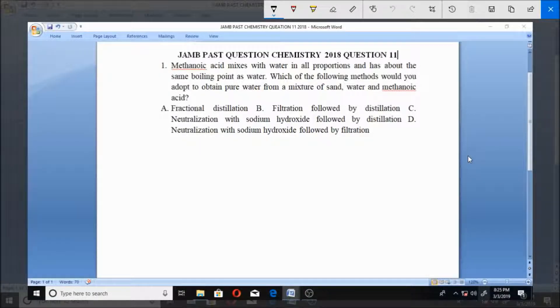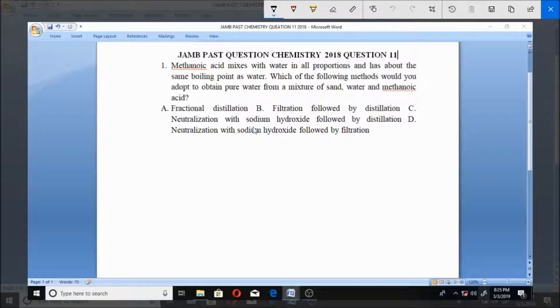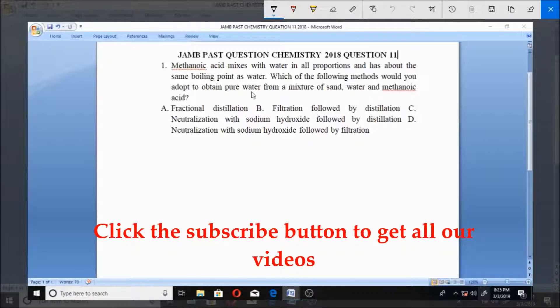Now let's look at question number 11 from JAMB Past Questions Chemistry 2018. Methanoic acid mixes with water in all proportions and has about the same boiling point as water. Which of the following methods would you adopt to obtain pure water from a mixture of sand, water, and methanoic acid?